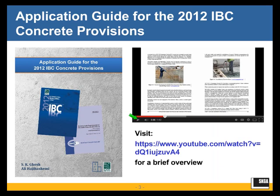This is a publication that we just brought out maybe a couple of weeks ago: Application Guide for the 2012 IBC Concrete Provisions. This publication has three parts to it. In the first part, we look at the concrete chapter of the IBC, talk about the problem that we alluded to, and give you the solutions to the problem that has arisen. The second part is a detailed discussion of changes from ACI 318-08 to 318-11. The third part consists of a significant number of worked-out examples. Everything that I'll cover today is covered in more detail in this publication, so you may want to look into this.